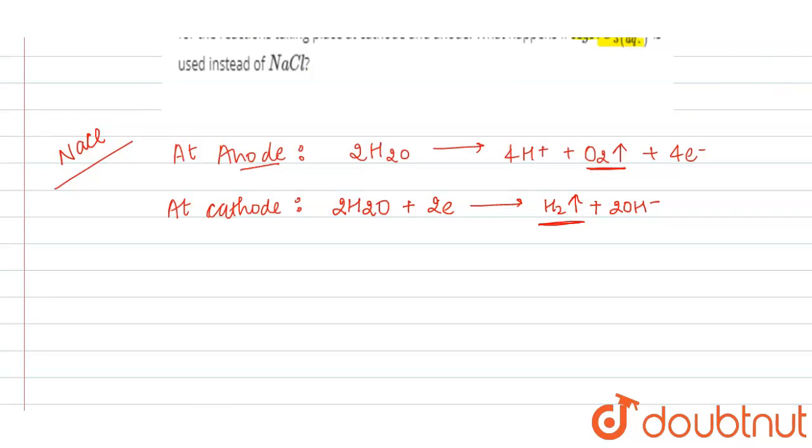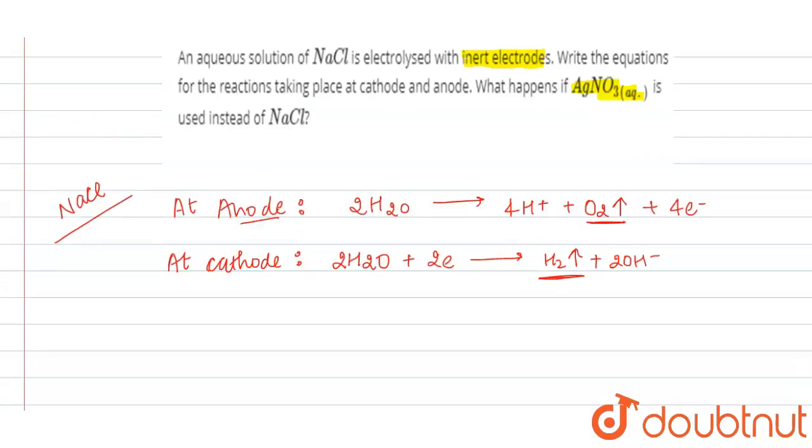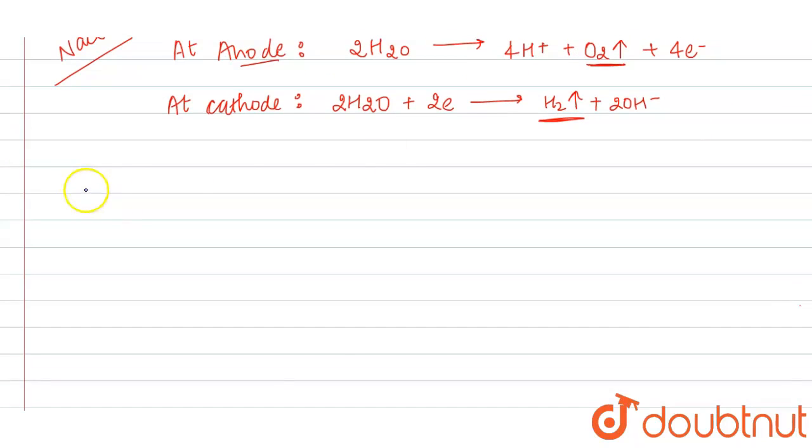While in case of AgNO3, aqueous AgNO3, at anode, water will get electrolyzed, just same as in case of NaCl. So O2 will be liberated here by evolving 4 electrons.